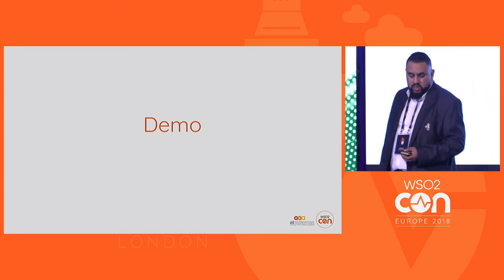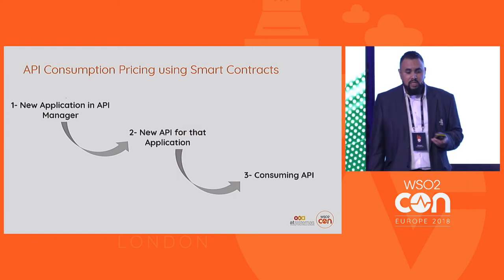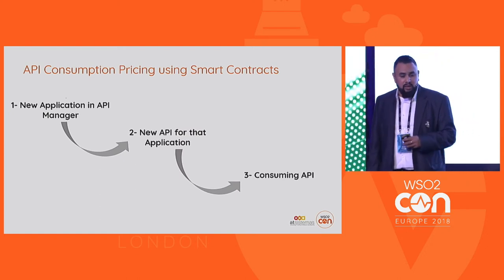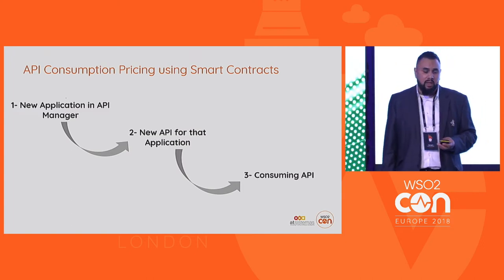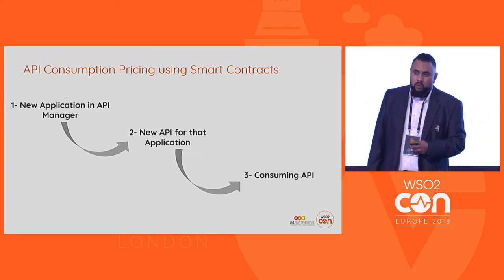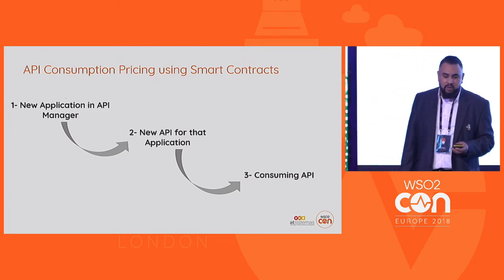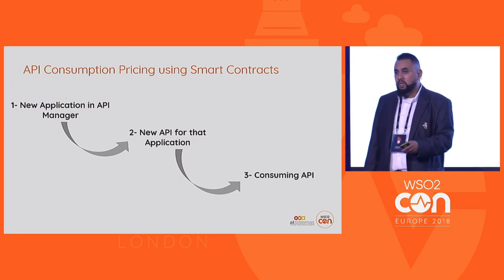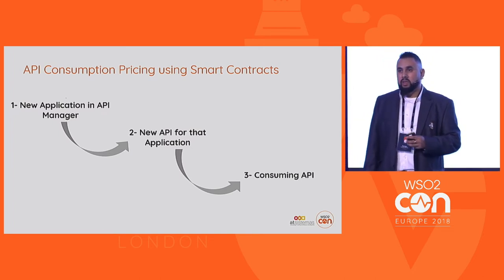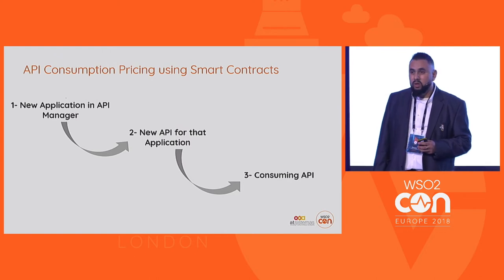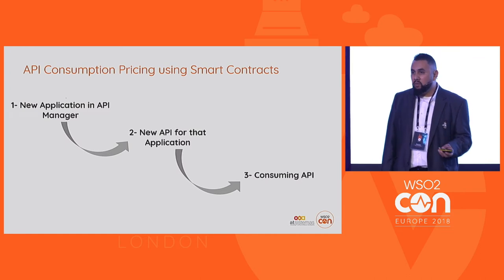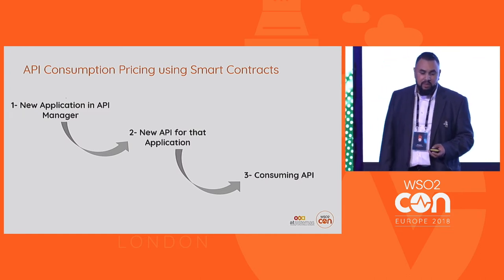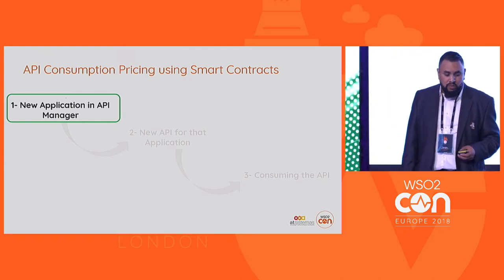Now I'm going to proceed to show you a quick demo of this proof of concept. This demo involves three basic steps: the first is creating a new application in the API store; the second step, we associate an API to this application; and the third step, we consume this API reaching the billing cycle so that we can issue a PDF invoice of the API consumption.